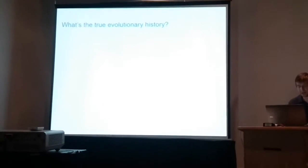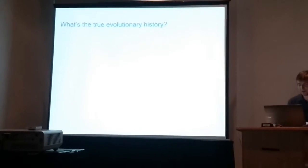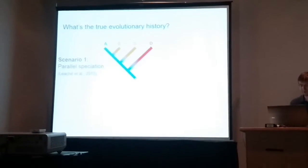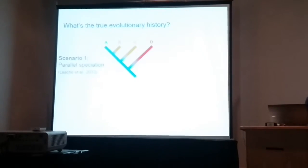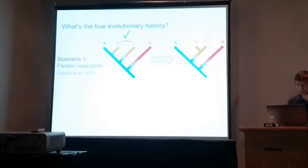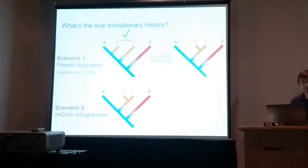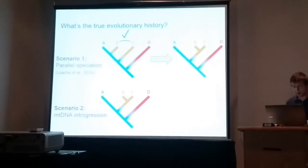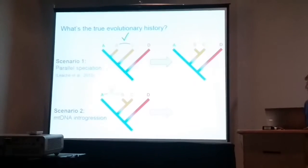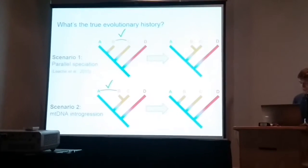We know that a major source of these kinds of conflicts is introgression. But there are actually two competing introgressive scenarios that can lead to this exact kind of conflict, depending on which history actually represents the original branching history. If you believe the mitochondrial history is original, then given sufficient introgression between parallel forms, gene trees will start reflecting the introgressive history at greater and greater rates of migration. But if you believe the nuclear history is correct, then mitochondrial capture can lead to an erroneous mitochondrial phylogeny that makes it look like parallel speciation has taken place.